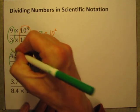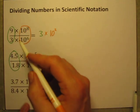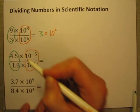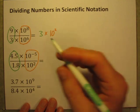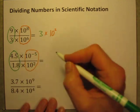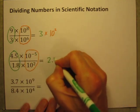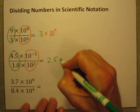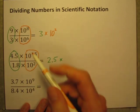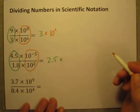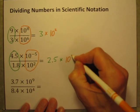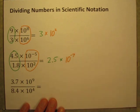Another example. Here if there are decimals to make it a little more complicated, it's still okay. Let's just divide the number part, then we'll divide the powers of 10. 4.5 divided by 1.8 is 2.5. Now when we divide the powers of 10, we subtract the exponents. Negative 5 minus 2 is 10 to the negative 7th power. Done.